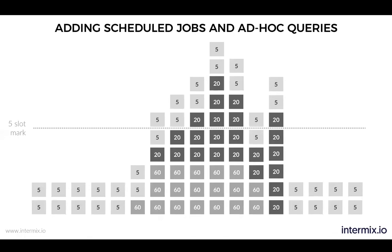Now let's add the scheduled jobs and ad hoc queries. Maybe they get scheduled at a certain time over and over again. In this hypothetical picture, I've now put in the bottom here these complex transforms that take 60 seconds. And then all of a sudden there's fresh data and new transforms, and you have your ad hoc users going at it as well — those are the dark 20-second queries. As this adds up, you can see it goes above the five-slot mark, so you have more than five queries running at a time.